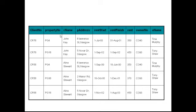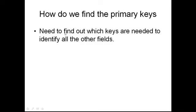So rent start and rent finish depend on both client number and property number. Rent depends on property number, as does owner number and owner name. As you can see, all the non-primary-key fields depend on these two primary keys. So we have found the primary keys.